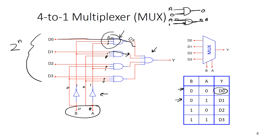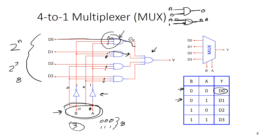So a multiplexer is just built out of basic AND and OR gates, and the number of inputs is always a power of two. With four inputs, I need two selector bits to choose which input goes to the output. If I had eight inputs — two to the third — I would need three selector bits, because in binary you need three bits to get eight possible combinations from 000 to 111 (zero to seven). And if I had 16 data inputs, I would need four selectors: A, B, C, and D on the bottom.